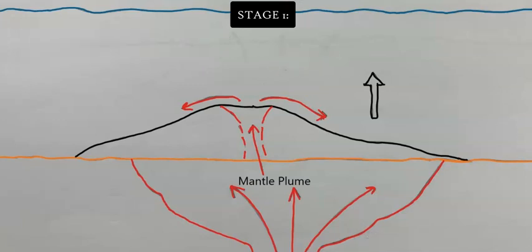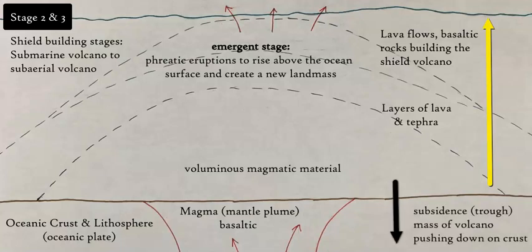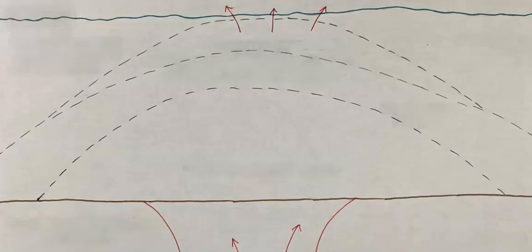Stages 2 and 3 represent the shield-building event, where the volcano grows larger and larger due to the volume of magma pouring out of the plume. It builds through layers of basaltic lava — pahoehoe and pillow lava — rising from the ocean floor toward the surface. In the Pacific, that's about 19,000 feet, taking millions of years to grow. Eventually it reaches the ocean surface, producing a phreatic eruption where water mixing with magma causes a very explosive eruption, creating a brand new landmass. About 85–95% of the total magma volume comes out during this emergent stage.